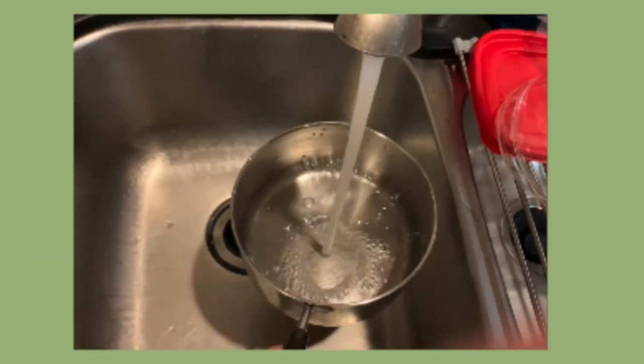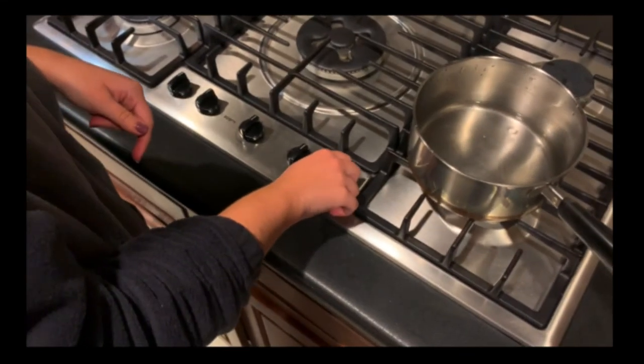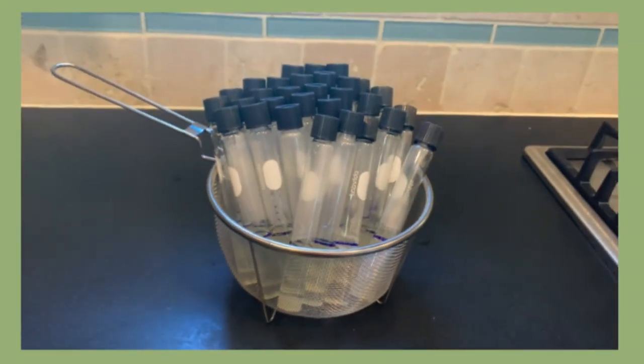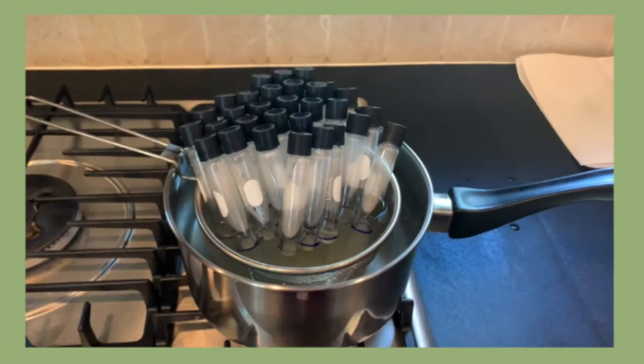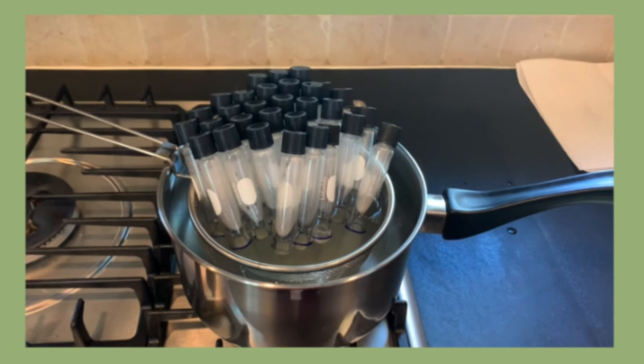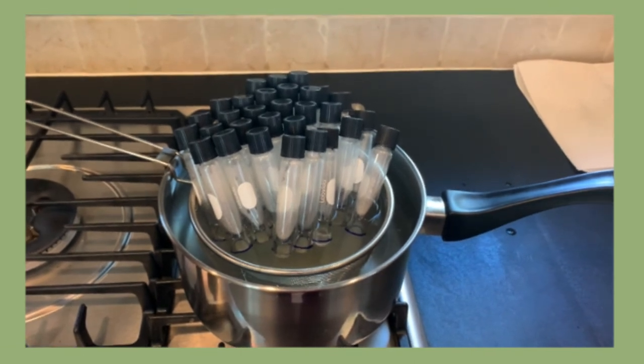Fill a pot with approximately 3 fourths full of water. Set the water on the stove to a boil. While waiting for the water to boil, put all filled culture tubes into a colander. Place the tubes in the colander in the boiling water for 20 minutes. This step serves to sanitize the medium and the tubes.